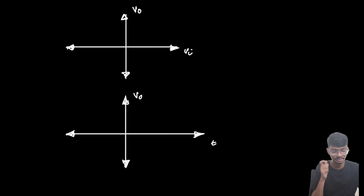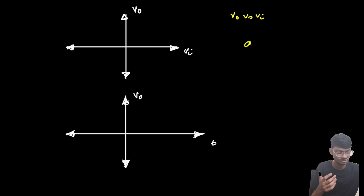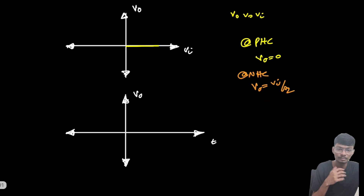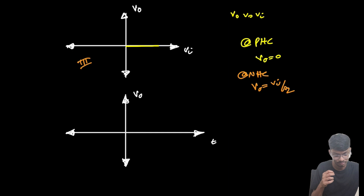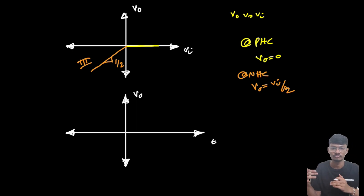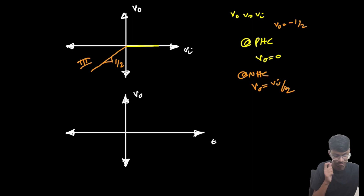The transfer characteristics is a plot of Vo versus Vi. For positive values of Vi, Vo = 0 volts. For negative values of Vi, Vo = Vi/2, giving a slope of +0.5. This lies in the third quadrant — not the second quadrant, which is a common misconception. For example, if Vi = -1, then Vo = -0.5 volts.